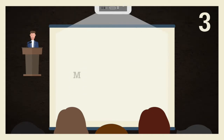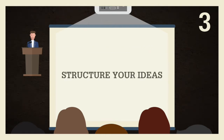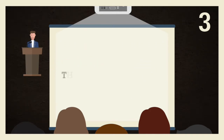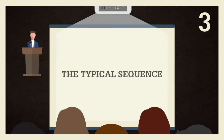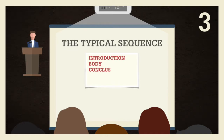Third, make an outline of your presentation. Once you have identified the main ideas, sketch out an outline of your presentation. Structure your ideas and link them together in a way that is logical, given your primary message and the point of view you have chosen to adopt. A presentation typically unfolds in the following way: introduction, body, conclusion, bibliographical references, and, if necessary, a thank you.